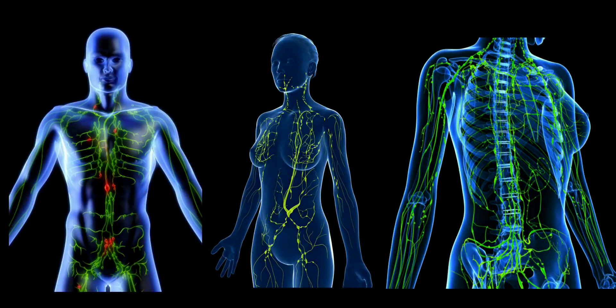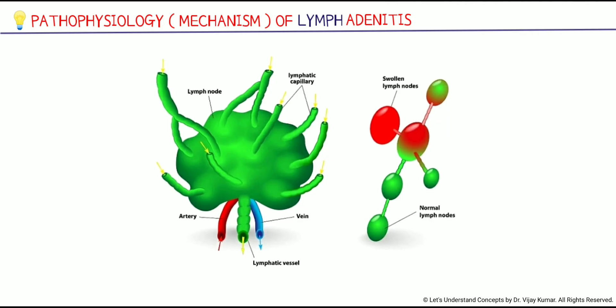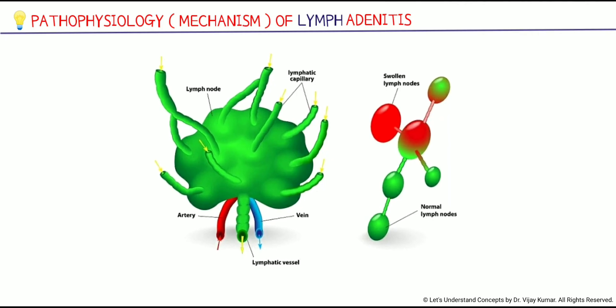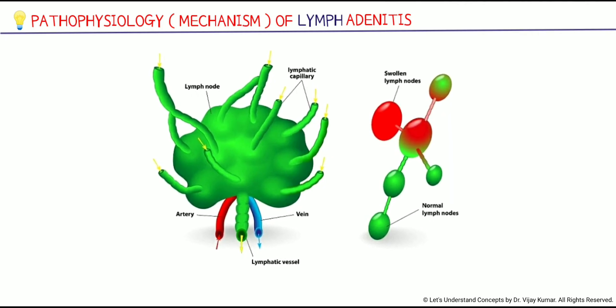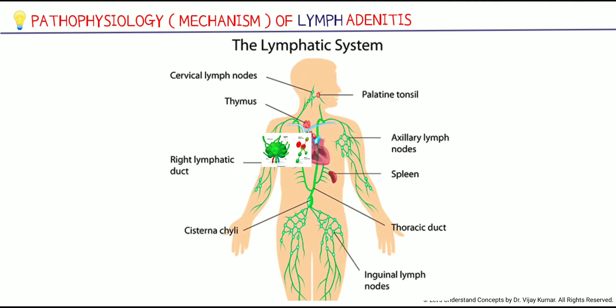You have about 600 lymph nodes in your body, but normal lymph nodes may only be felt below your jaw, neck, under your arms, and in your groin area. A normal lymph node is small, oval-shaped, and firm. They're linked by lymphatic vessels, which carry lymph throughout the body.